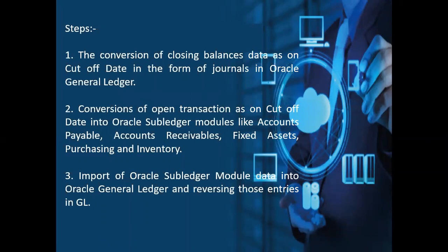The second step is conversion of the open transactions — that is uploading of the open transactions as of the cutoff date into Oracle subledgers like Accounts Payable, Accounts Receivable, Fixed Assets, Purchasing, and Inventory. The last step is importing those subledger module data into Oracle General Ledger and then reversing those entries in GL.